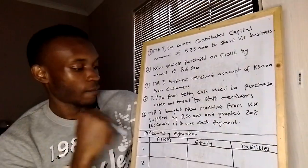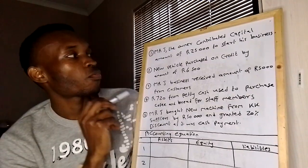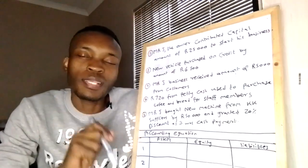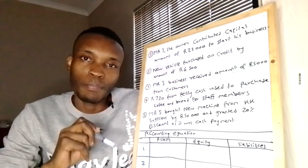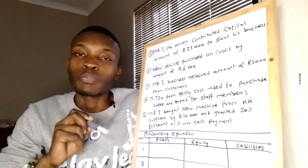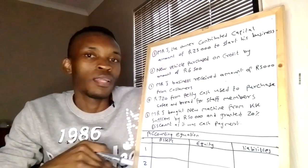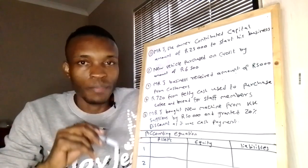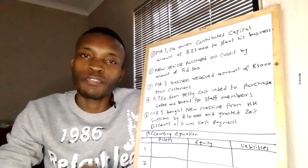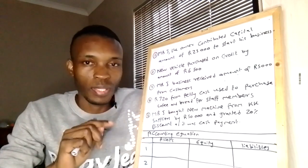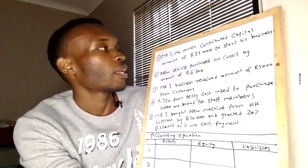Let's start with the first one. Mr. J, the owner, contributed a capital amount of $25,000 to start his business. When dealing with a sole trader, the first transaction they will give you is for capital. Remember, capital is the money that we use to start a business, which means before you do anything else you must start by contributing capital. Each transaction you read, make sure you identify two components — there's no way a transaction can have only one component.